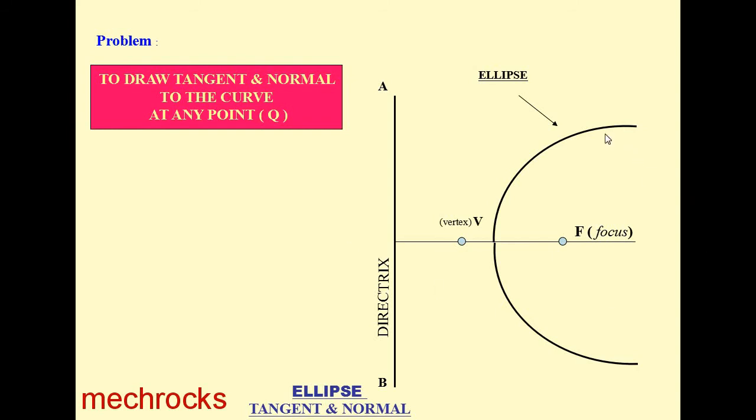Now you take a point Q on the ellipse, anywhere on the ellipse. I am taking one point here and name it Q. Now we will draw the tangent and normal to this ellipse at point Q.